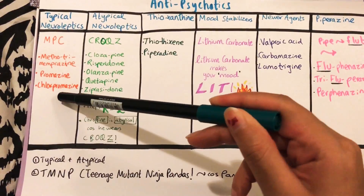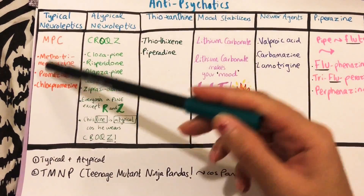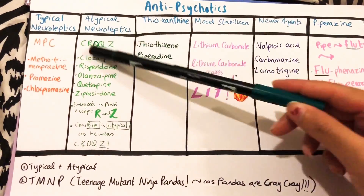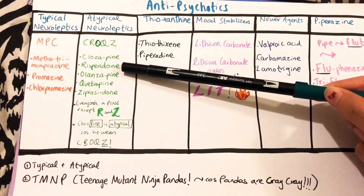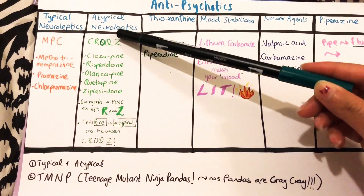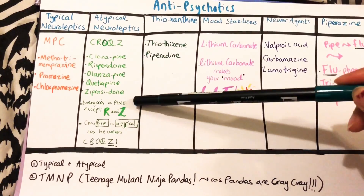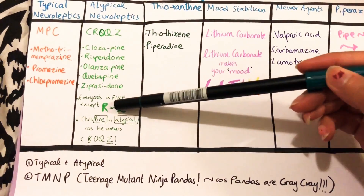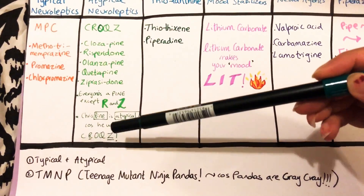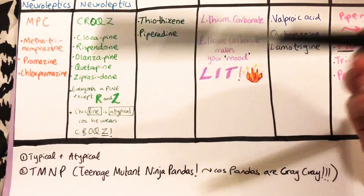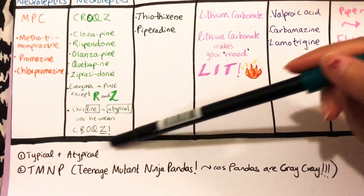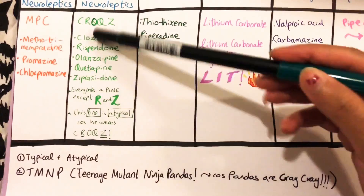For atypical neuroleptics, everyone's a '-pine' except R and Z. I remember this by thinking 'Chris Pine is atypical because he wears Crocs' — those Croc shoes. He's very atypical because he wears Crocs, so all these drugs end in '-pine' except R and Z.